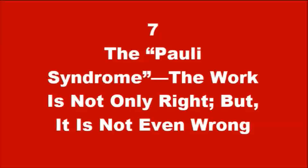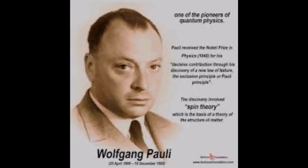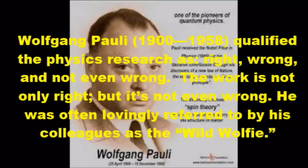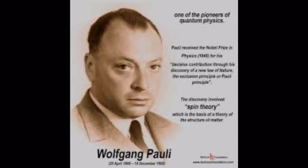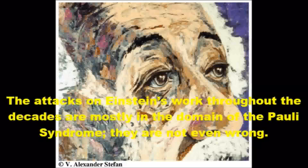The Pauli syndrome. The work is not only right, but it is not even wrong. Wolfgang Pauli, 1900–1958, qualified physics research as: right, wrong, and not even wrong. The work is not only right — it's not even wrong. He was often lovingly referred to by his colleagues as 'the Wild Wolfie.' The attacks on Einstein's work throughout the decades are mostly in the domain of the Pauli syndrome — they are not even wrong.